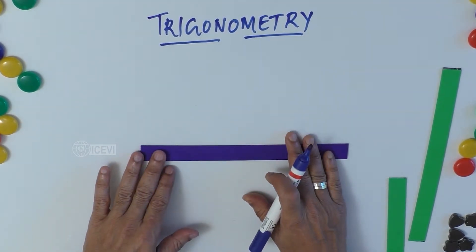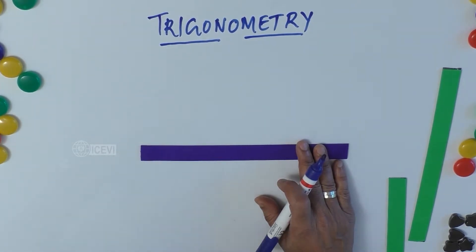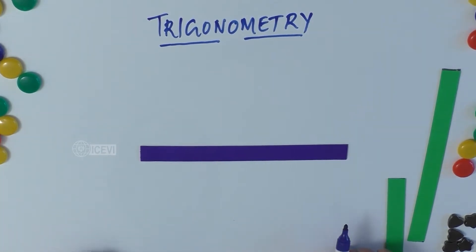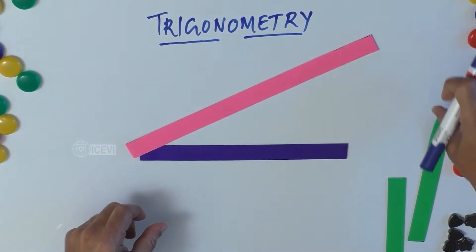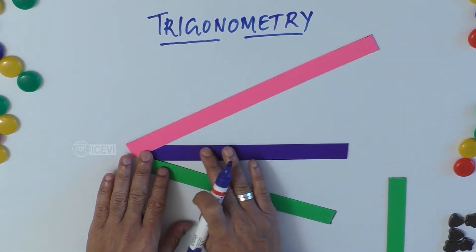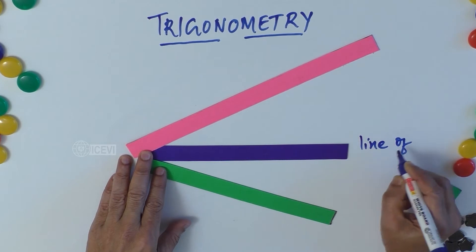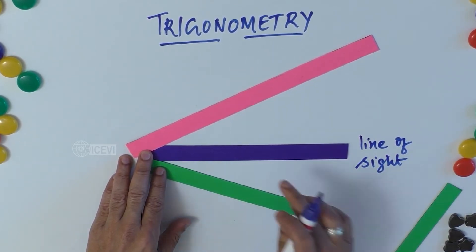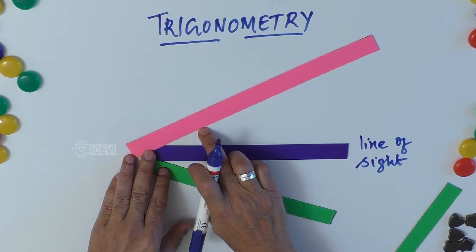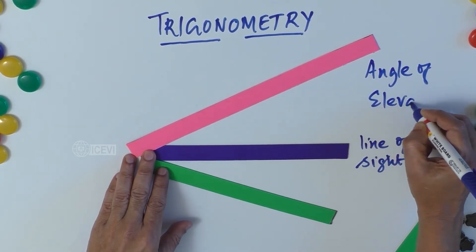Let us discuss some basic concepts. In day-to-day life we say 'look straight,' which means we are looking ahead on an imaginary line — we call this the line of sight, and we assume it is zero degrees. When you look up, there is an angle involved; we call this the angle of elevation.